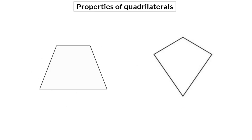The first two quadrilaterals you looked at in Grade 8 were the trapezium and the kite. A trapezium has only one property: it has one pair of opposite sides that are parallel. A kite has no parallel lines, but it has two pairs of adjacent sides that are equal in length, as well as one pair of opposite angles equal in size.